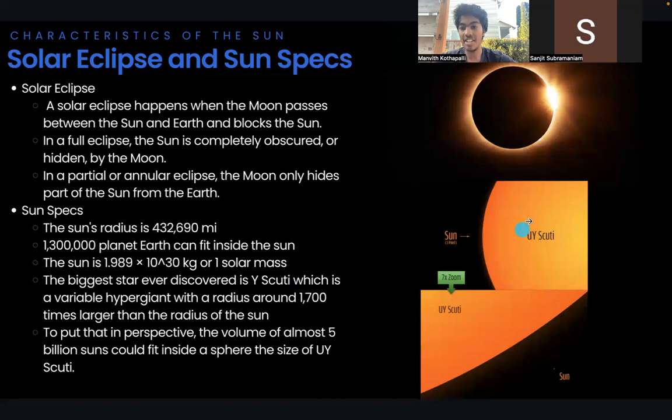To put that into perspective, the volume of that could fit almost 5 billion suns. In the picture, you can see that Y Scotty, the sun is barely visible. It's like one pixel, so it's really, really small.